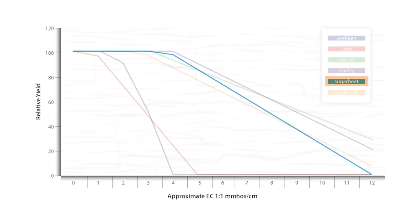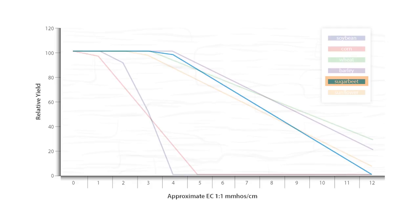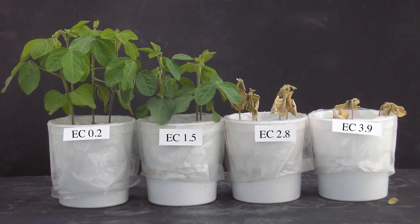Here's another way to show the effects of salinity on crops. Soybean, which is not very tolerant of salts, shows reduced yields at an EC between 1 to 2.